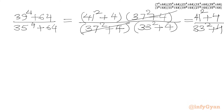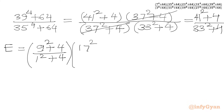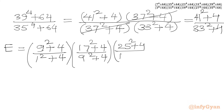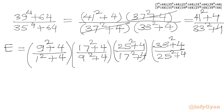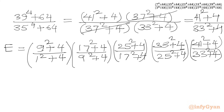Now we multiply all the ratios together. E equals: [(9² + 4)/(1² + 4)] × [(17² + 4)/(9² + 4)] × [(25² + 4)/(17² + 4)] × [(33² + 4)/(25² + 4)] × [(41² + 4)/(33² + 4)]. We can cancel all intermediate terms from numerator and denominator in this telescoping product, leaving (41² + 4) over (1² + 4).